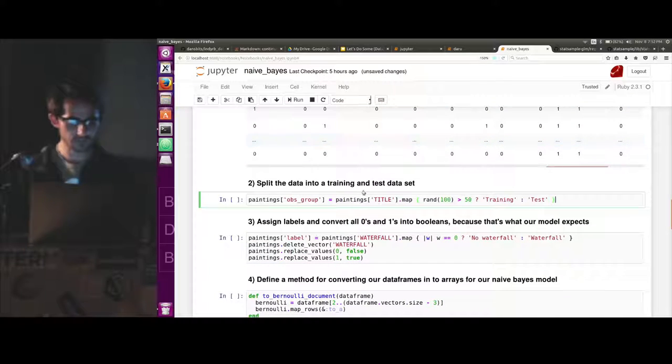So we have our data. First thing you would typically want to do is split your data into training and test data. So you want some data to feed into your model to kind of teach it what a waterfall painting looks like. And then you need some other data to feed into that model to try to predict. And that's how you assess whether your model is actually accurately predicting waterfalls or not.